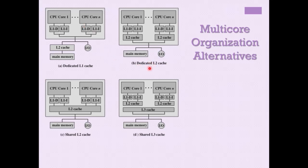The second form of multi-core organization also makes L2 cache dedicated to a single core by adding cache hierarchy to each core. This avoids traffic when accessing the shared L2 cache. In this architecture, CPU core 1 can take data from its dedicated L2 cache, and similarly each other core also has its own L1 cache as well as L2 cache. This is called the dedicated L2 cache organization.